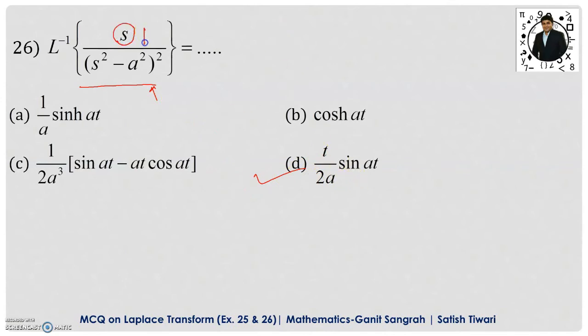If in place of s if you are having the 1 then which one will be correct here? This formula that is L inverse of 1 upon s square minus a square whole square will be given by 1 by 2a cube sin at minus at cos at and inverse Laplace transformation for the cosh at is given by L inverse of s upon s square minus a square. These are the basic formulas you should remember and for the given problem option d is correct which is the required inverse Laplace transform.